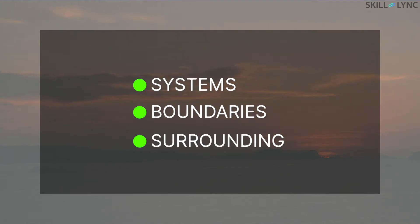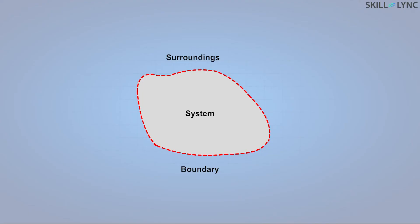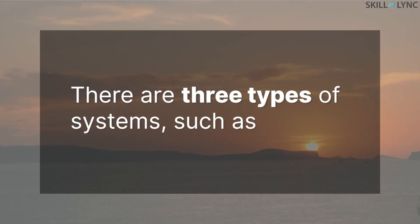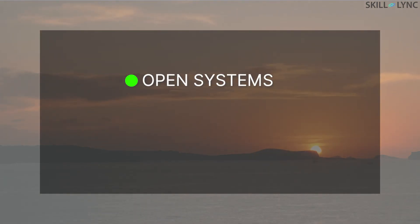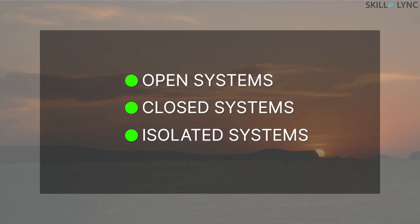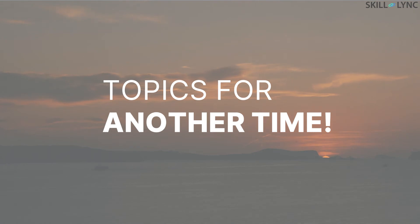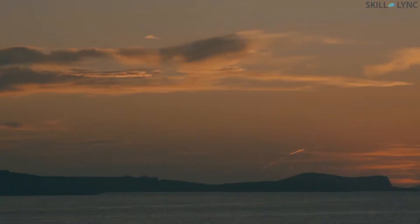In thermodynamics, a system is a finite quantity of matter or a given region of space which is under study. The actual or hypothetical cover enclosing the system is the boundary. This boundary may be stationary or non-stationary. Anything outside this boundary is the surroundings. There are three types of systems: open systems, closed systems, and isolated systems. We'll talk about systems and their types in detail in our upcoming videos.